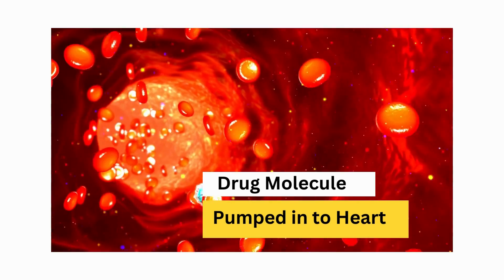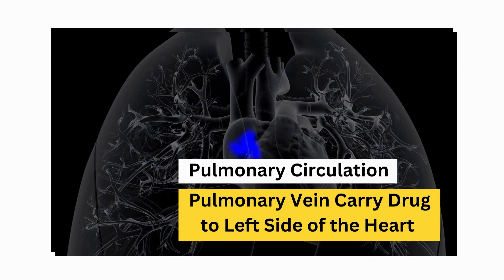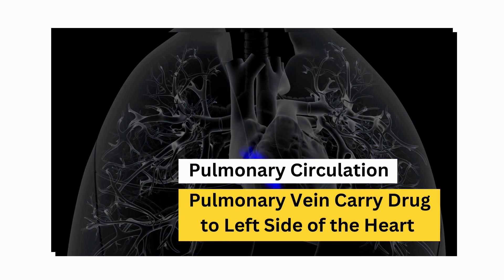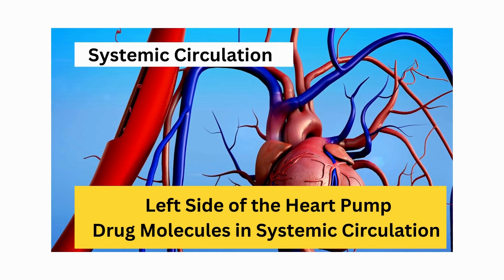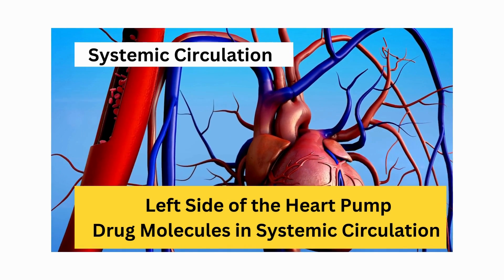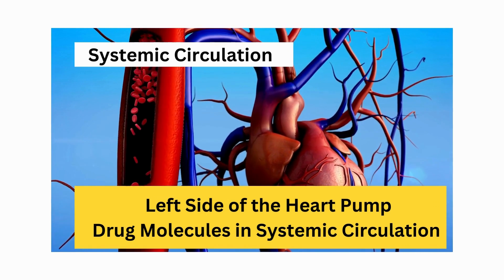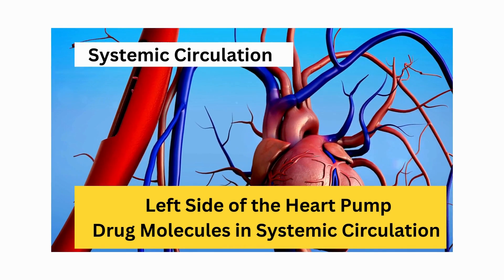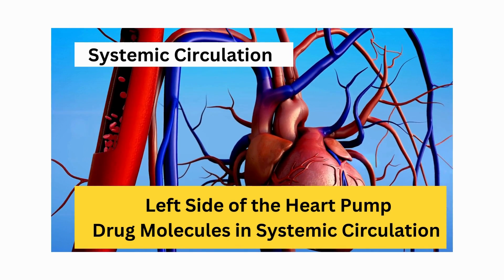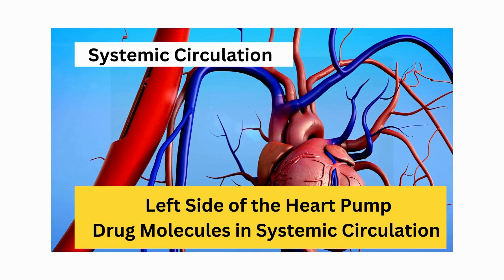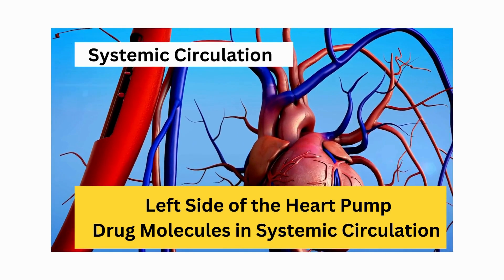Once the drug is pumped into the heart, it goes to the pulmonary circulation. The pulmonary vein then carries the drug to the left side of the heart — through the atrium and then the ventricles — which pump the drug into the systemic circulation.